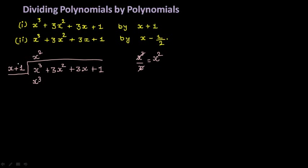Now, you also multiply x square with 1, giving you 1x square. Now change the sign — minus, minus — as we are always doing subtraction, we always need to change the sign. So x cube minus x cube will be 0, and 3x square minus 1x square gives you 2x square plus 3x plus 1.